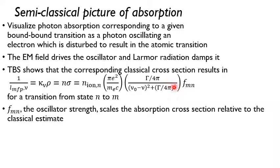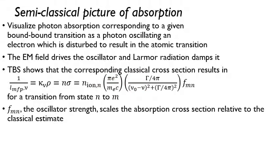What's added at the end is an extra factor — this F factor corresponding to the transition from state N to state M. This is known as the oscillator strength. It basically scales your actual absorption relative to the semi-classical estimate.